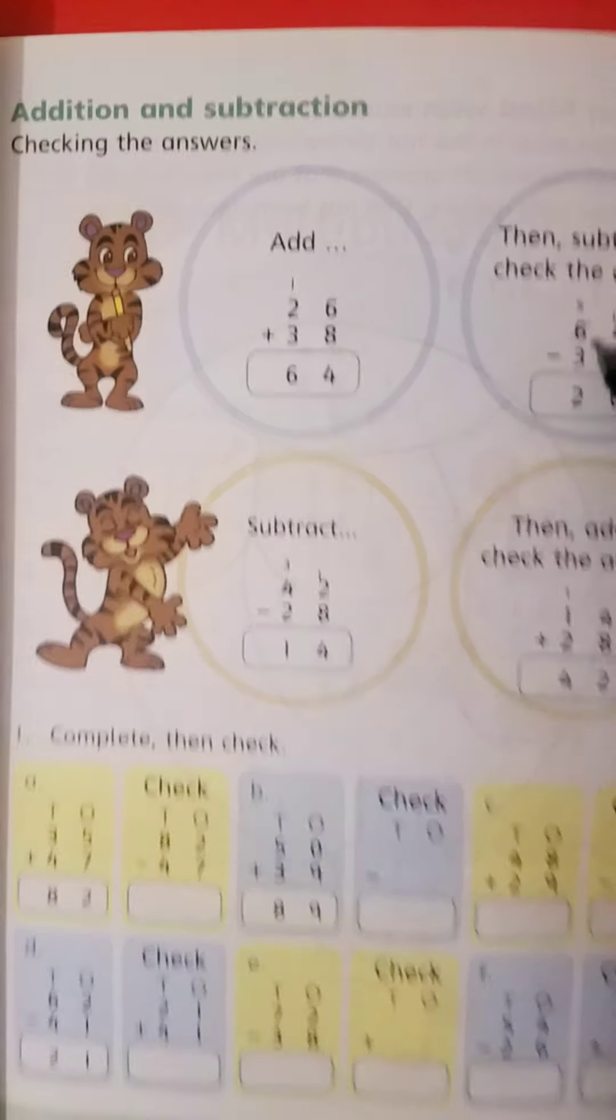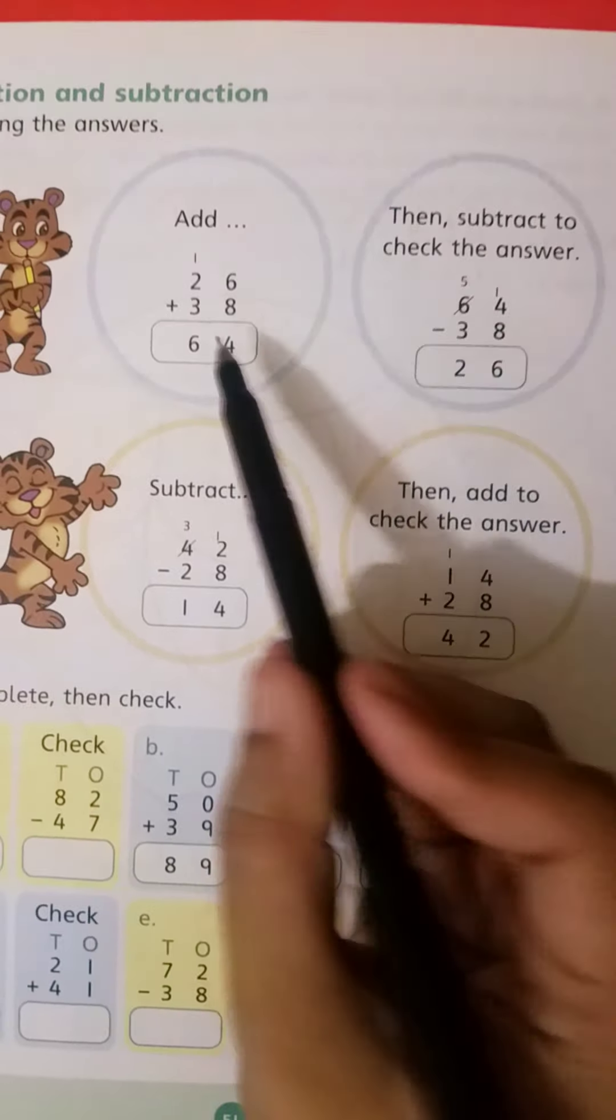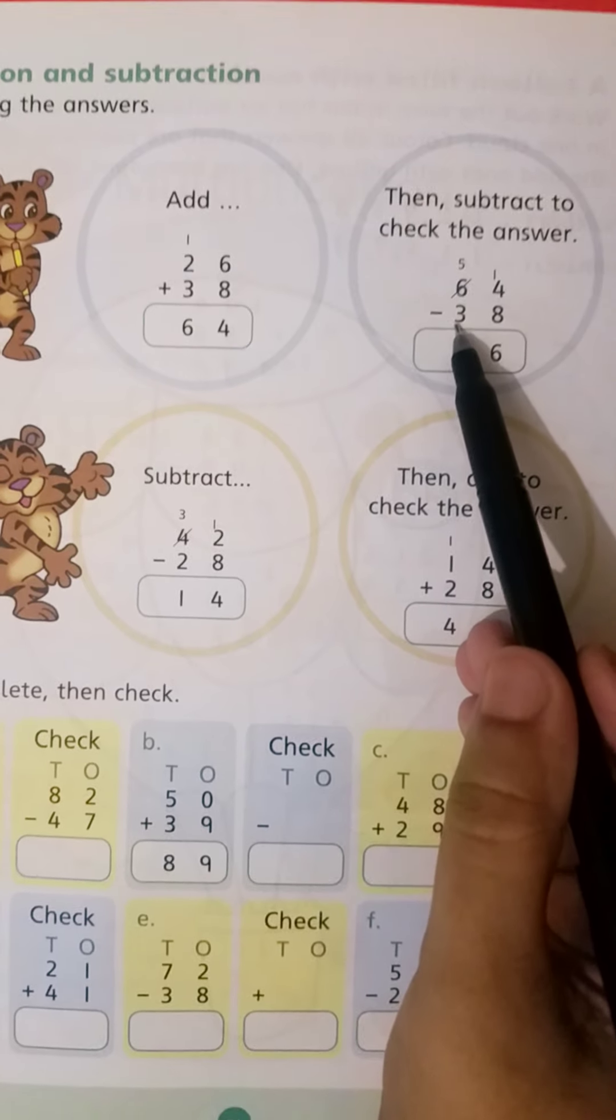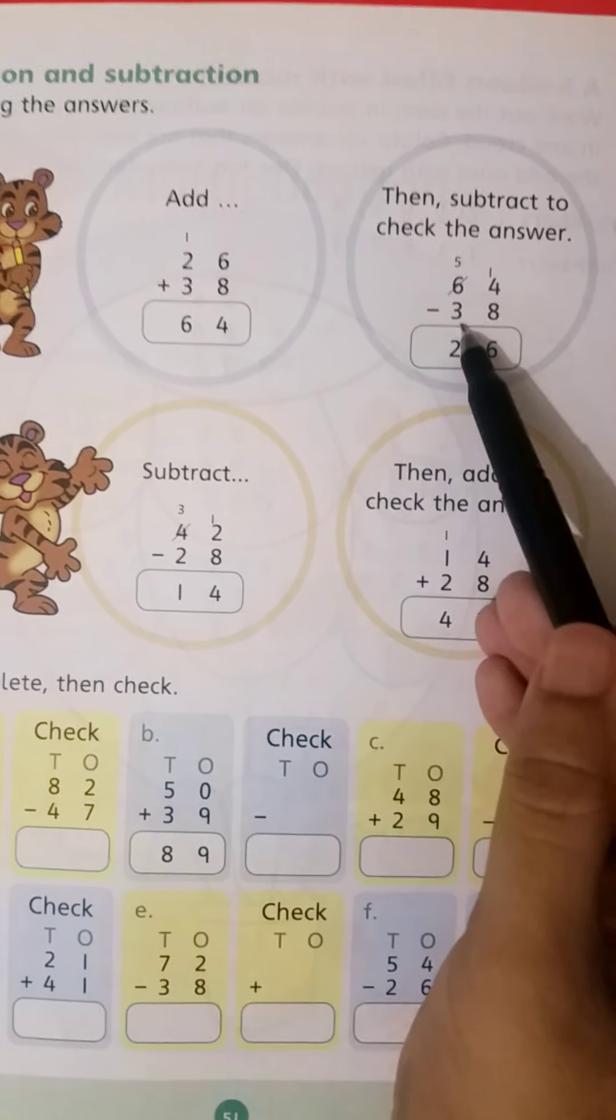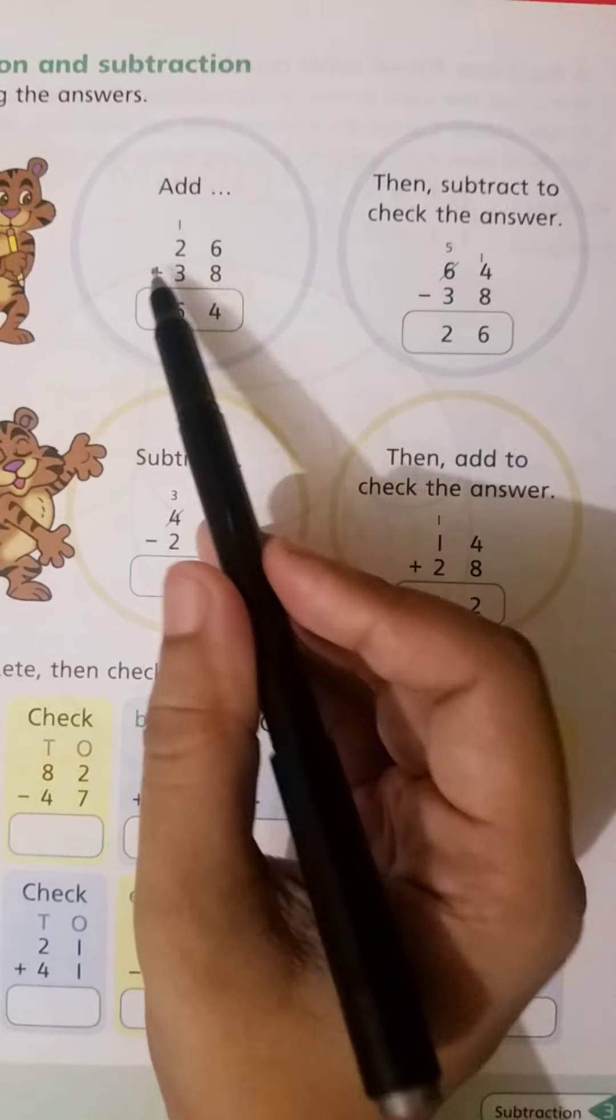To check the answer, first write the answer here and write the second number here, and now subtract it. First place add, and now...